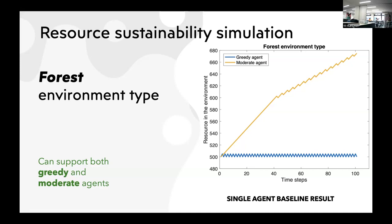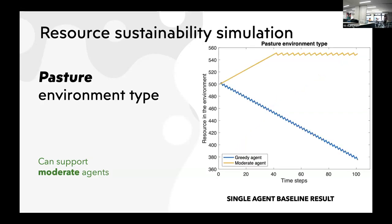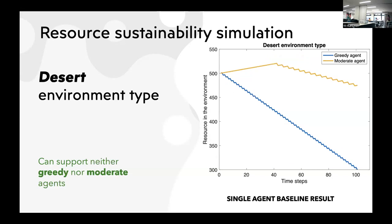The pasture environment can support moderate agents. If an agent is greedy, the resource gradient slopes downward. In the case of moderate behavior, since the agent is not foraging at all time instances, the resource is sustained — so we want agents to take moderate behavior. If it's a desert, it's a no-win situation: it can support neither greedy nor moderate agents, so it's a downward curve for both cases. This is the single-agent baseline result; multi-agent results follow shortly.